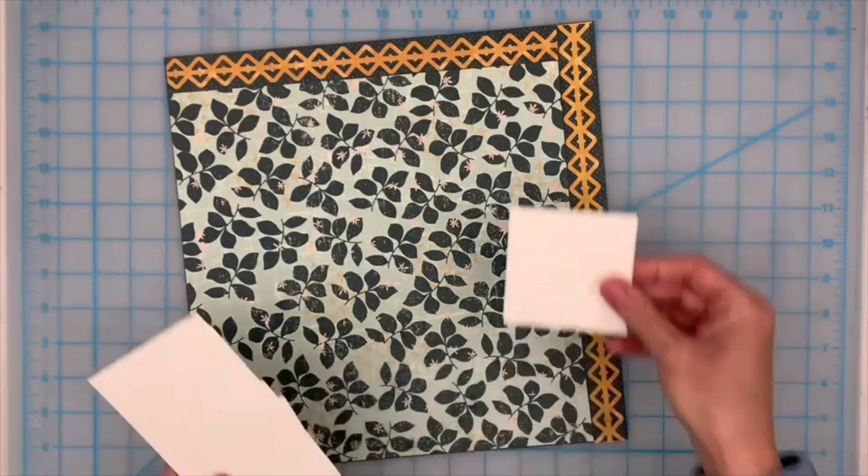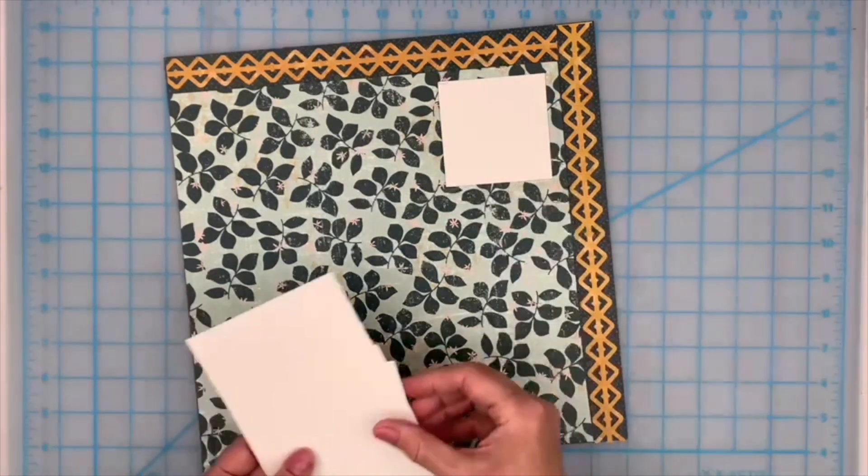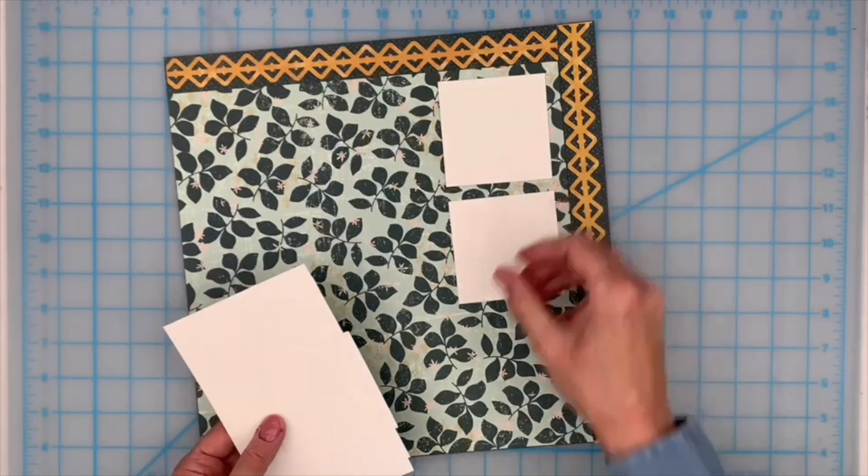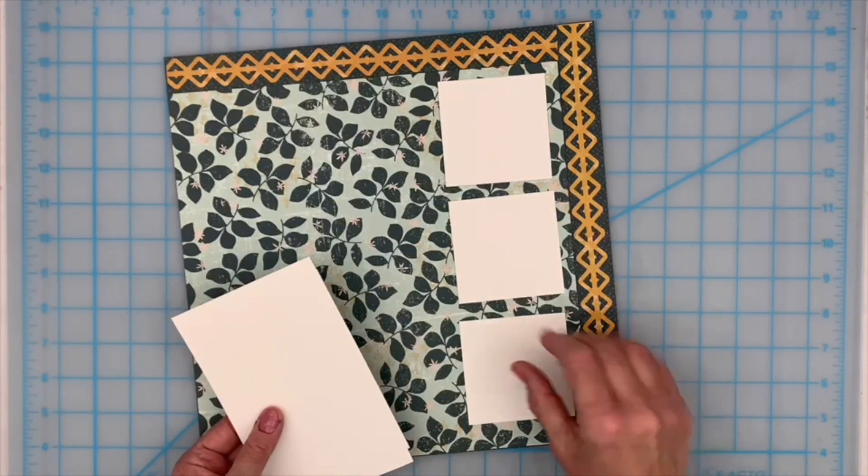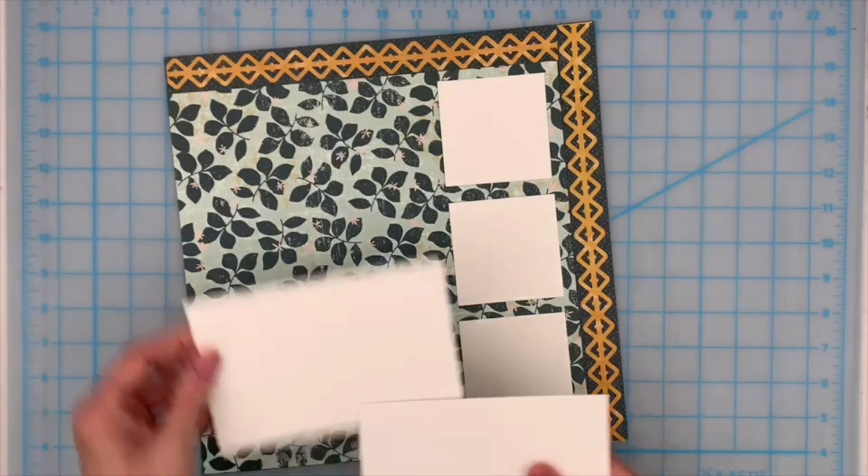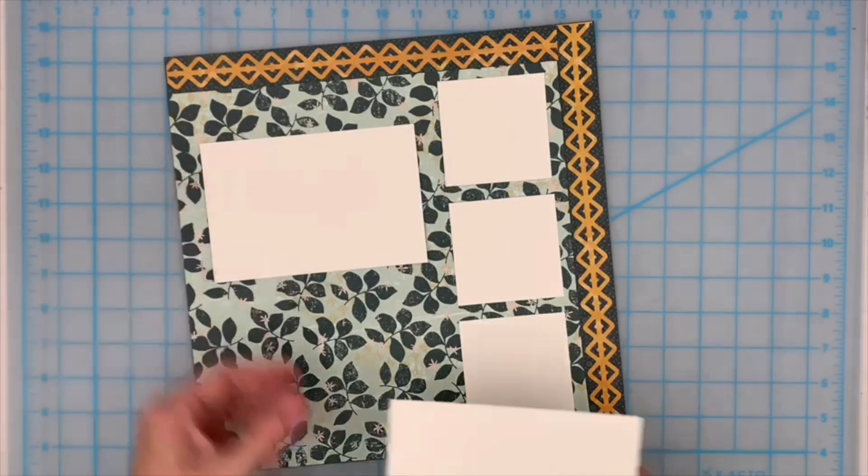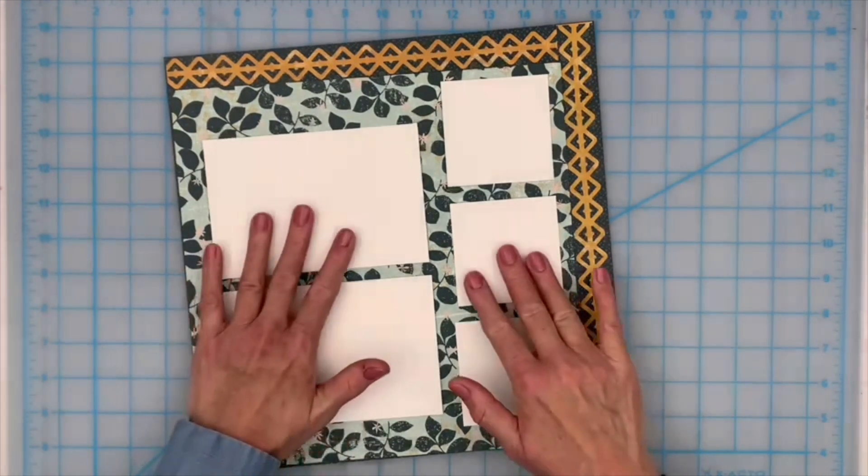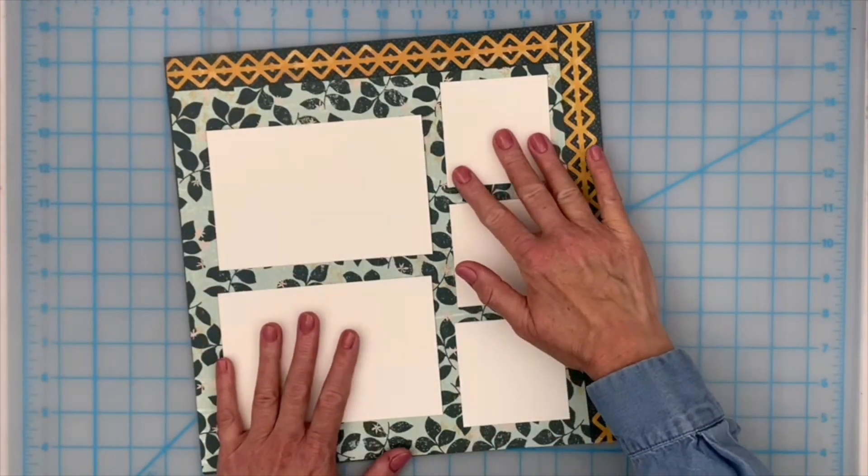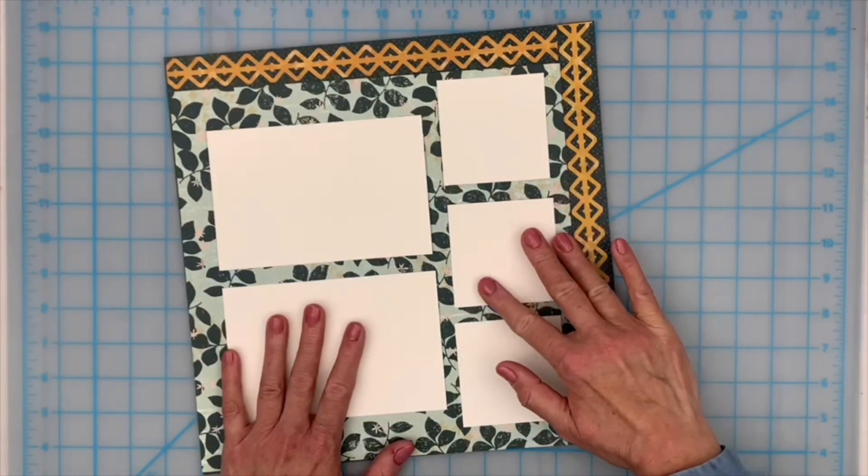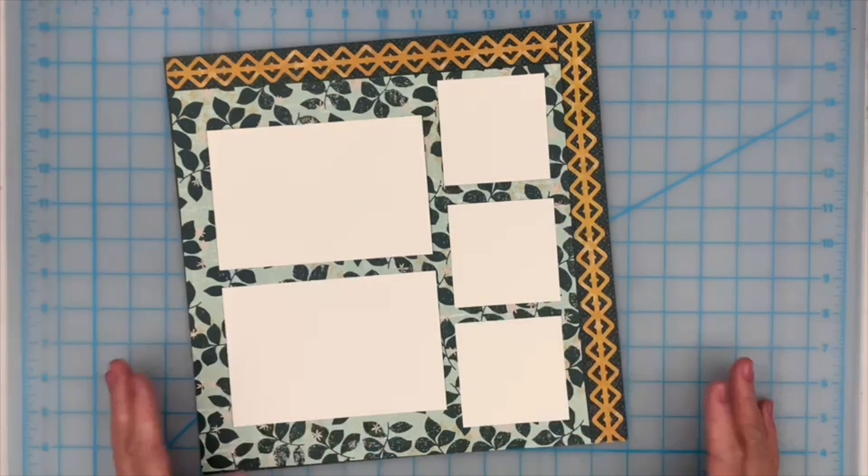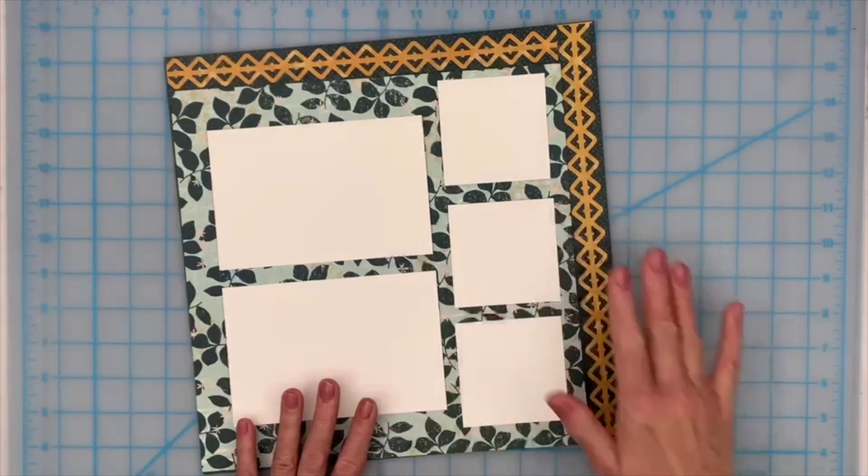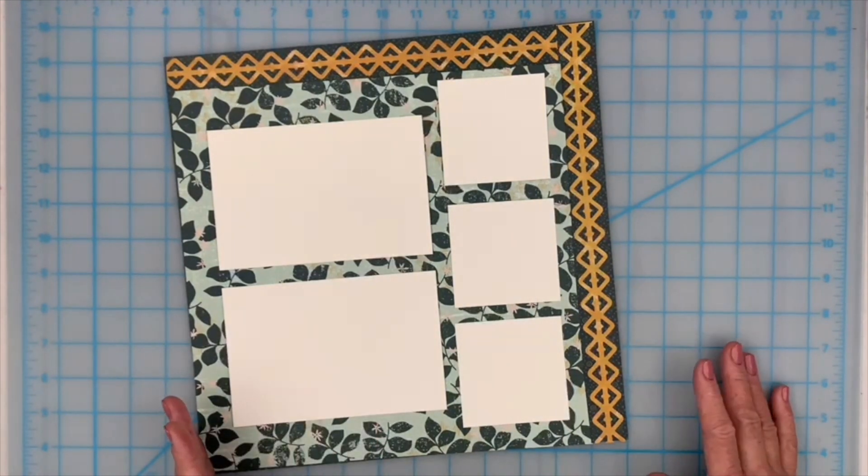Now we're going to have room for five photos on this layout. I'm going to place three 3x3 photos on this side and two 6x4 photos along here, and you can arrange those however you like. I always like to use scraps of cardstock cut to the standard size of photos so I can play around with the arrangement.